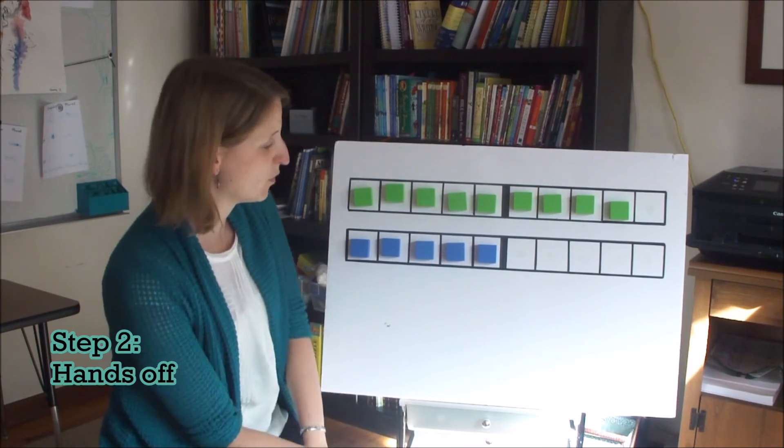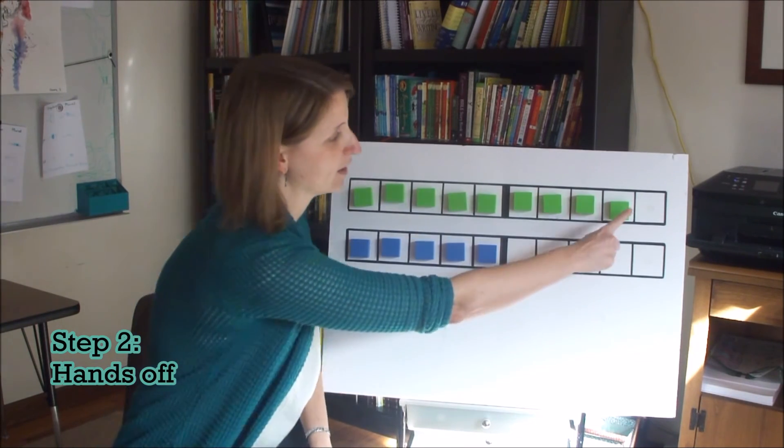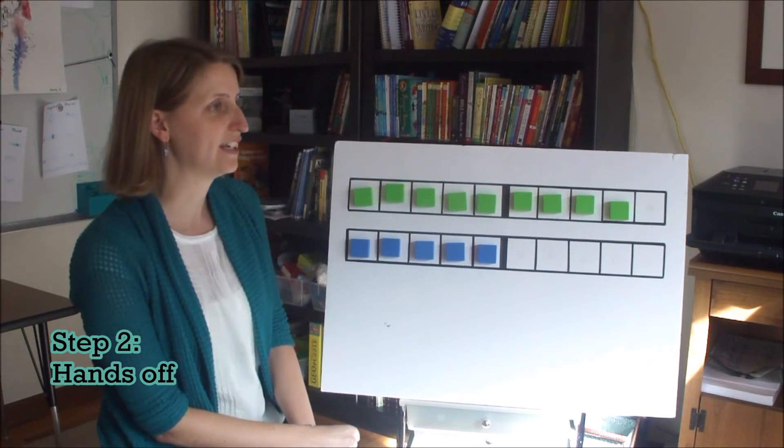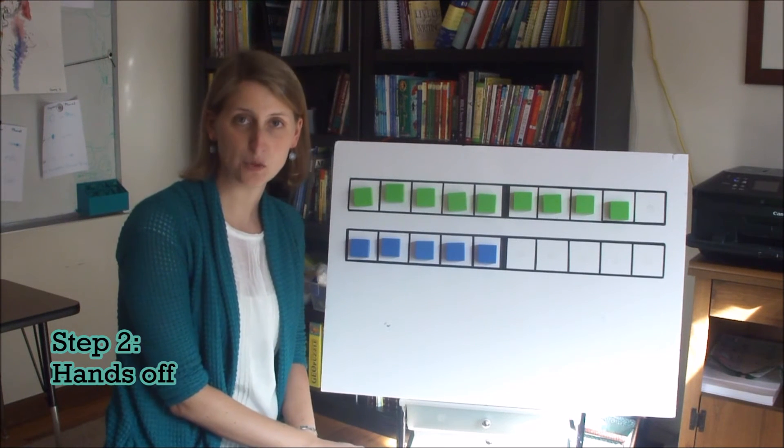So she'd think, okay, 9 plus 5, well, what I can do is I can move one block over. When that gets filled in, I'll have 10 and 4. So 9 plus 5 is 14.